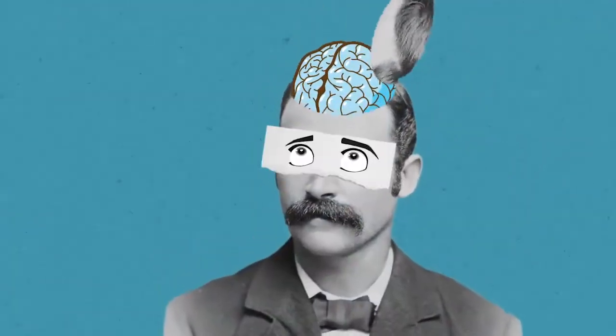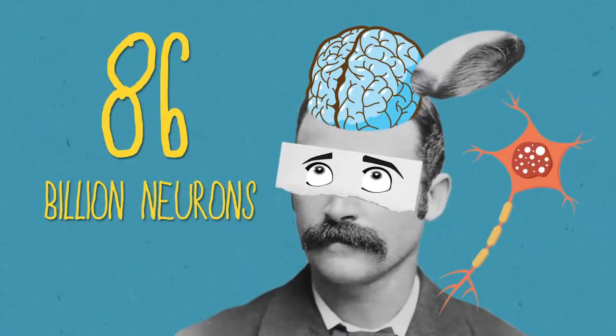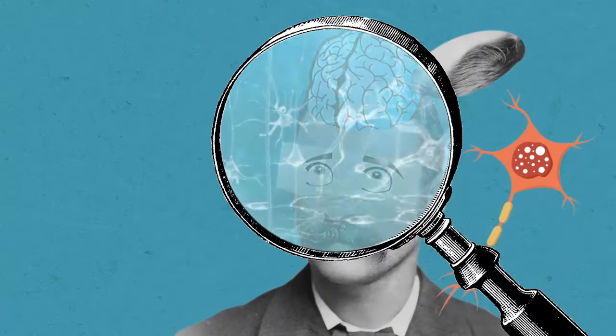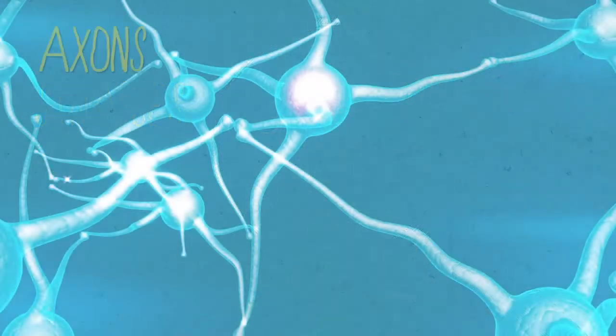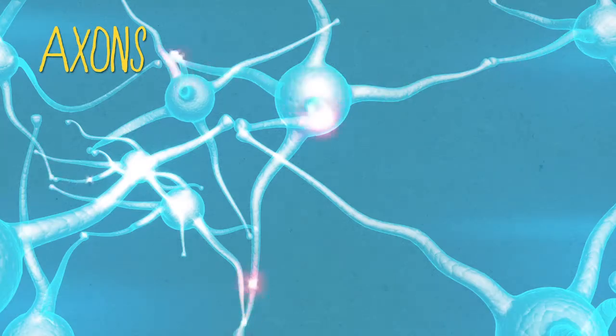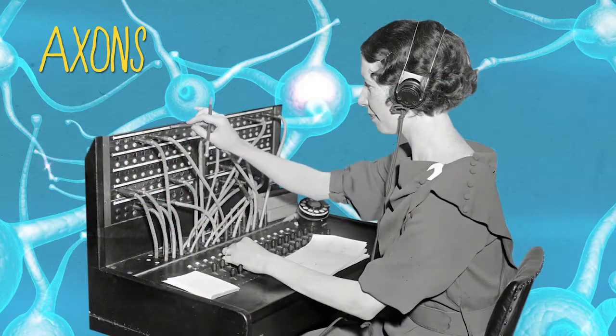The human brain has an average of 86 billion neurons. These neurons communicate with each other through connections called synapses. Information travels through the axons that are the elongated part of the neurons, connecting them with each other as cables.